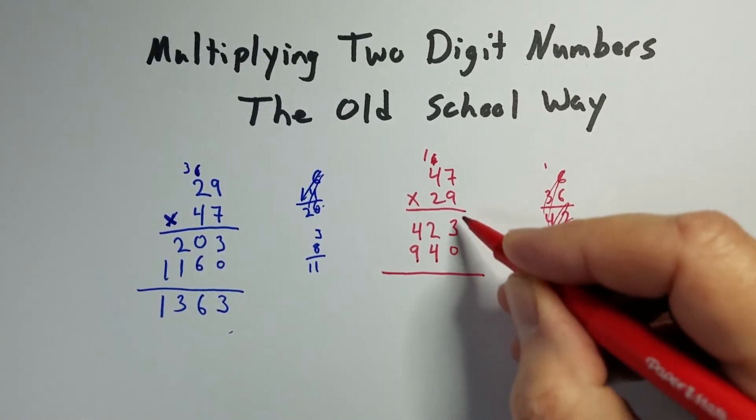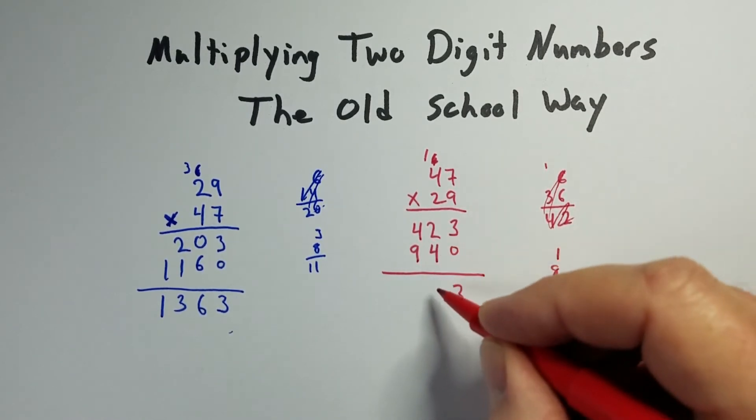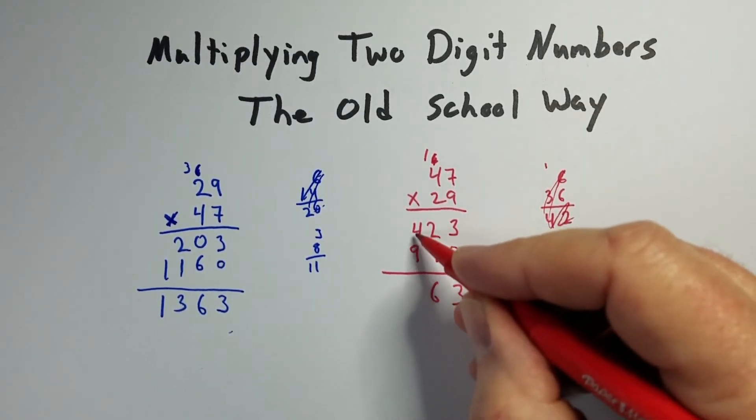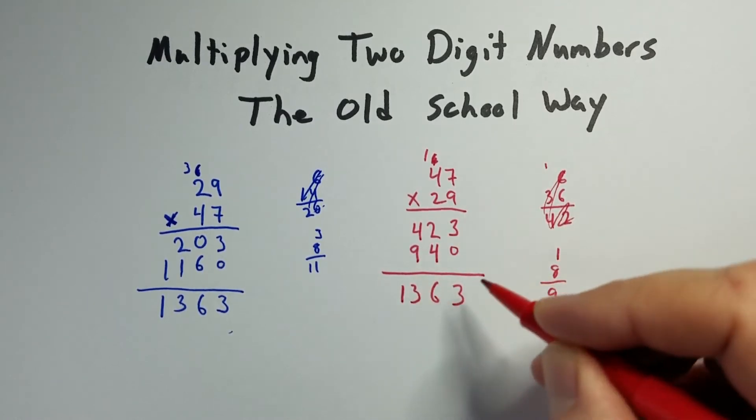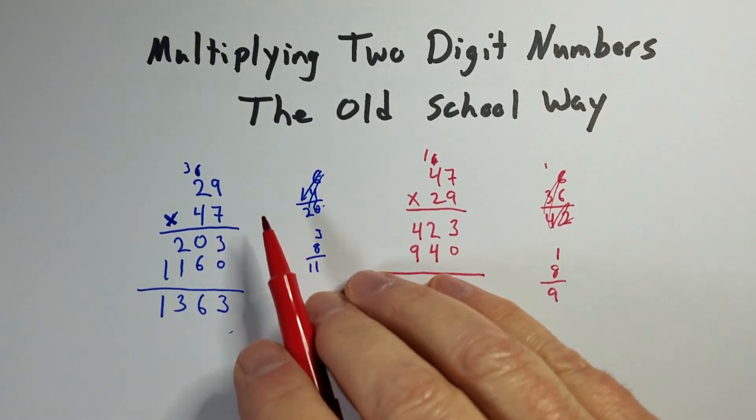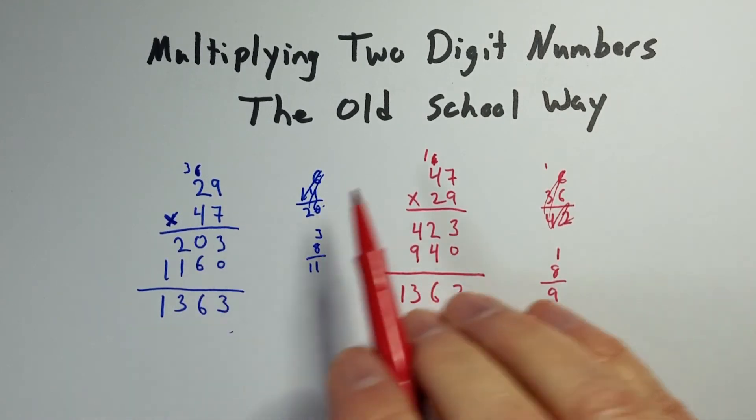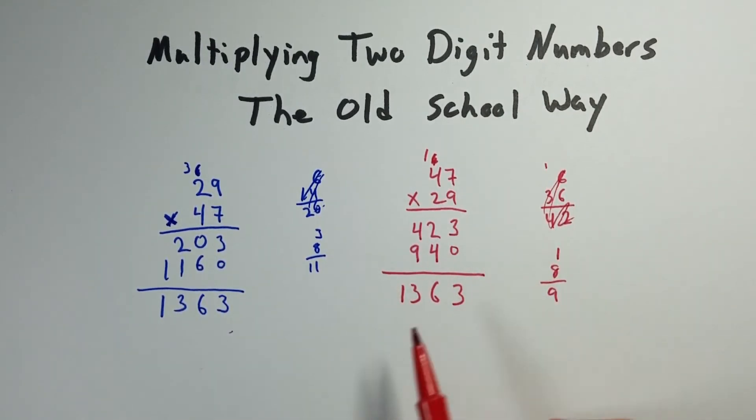Now we're going to add these numbers together. 3 plus 0 is 3, 4 plus 2 is 6, 9 plus 4 is 13. And we get the exact same answer. So it doesn't matter the order as long as you keep the number the same. You can't mix and match the numbers. But 29 times 47, 47 times 29, both give you the same answer.